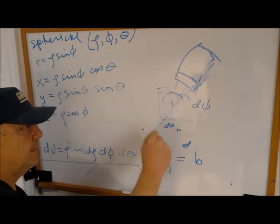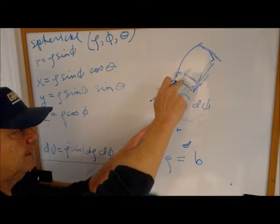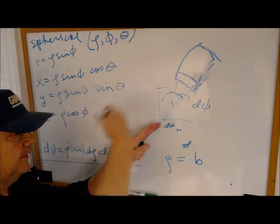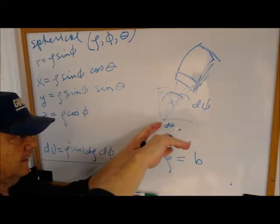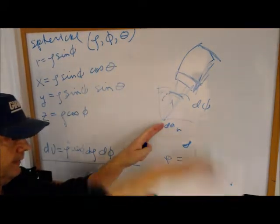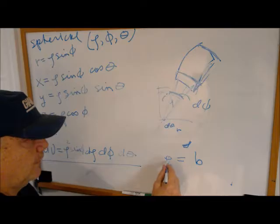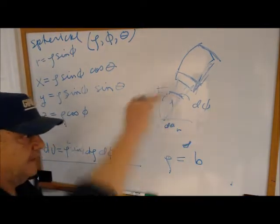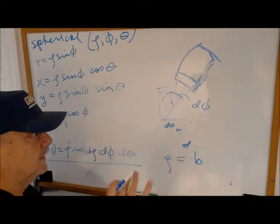So what's theta? Well, theta could be anything. And what's phi? Well, phi could be anything, zero to pi radians. So rho equals B, it is a sphere.